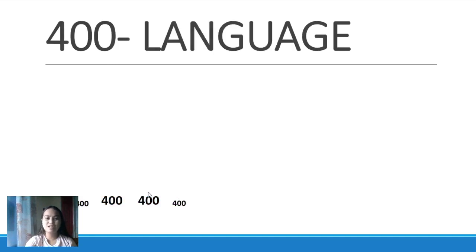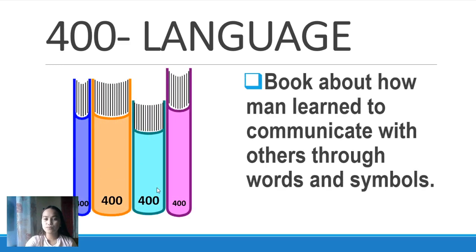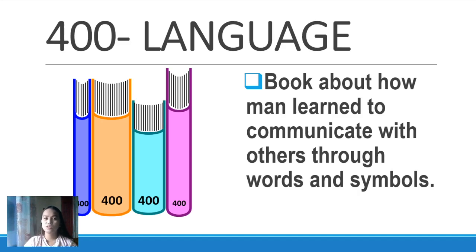For 400, it is all about languages. These are books about how men learn to communicate with others through words and symbols. You can find books about words and how to communicate with people using different languages. We can speak English, Tagalog, Filipino. You can search for these in the 400 section.